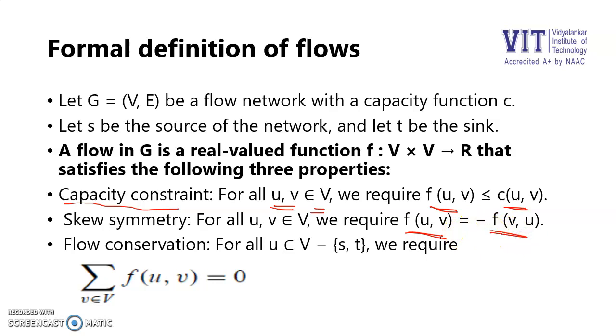Finally, it says conservation: for all vertex u that belongs to the vertex pair V minus {s,t}—minus S and T means all vertices minus source and sink—the flow through all these vertex pairs, if you sum it, it should be zero eventually. So from S to T, eventually the overall sum of the flow from U to V should be zero. This is how we will conserve it.